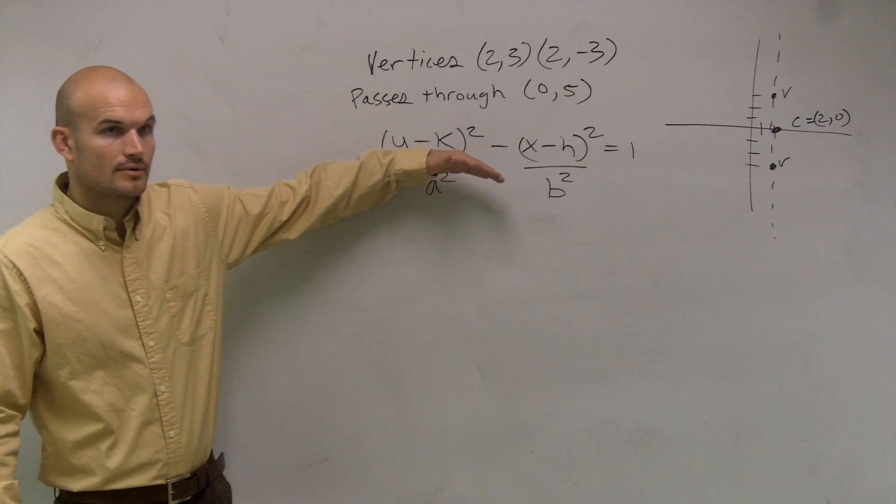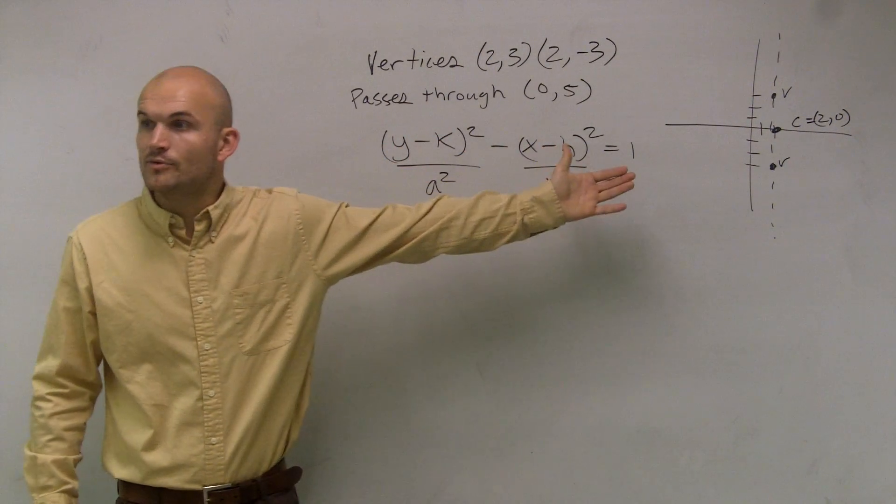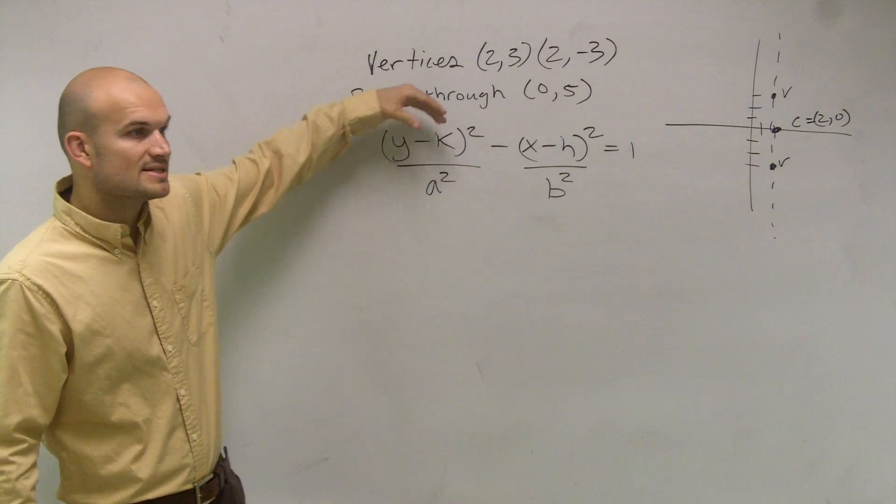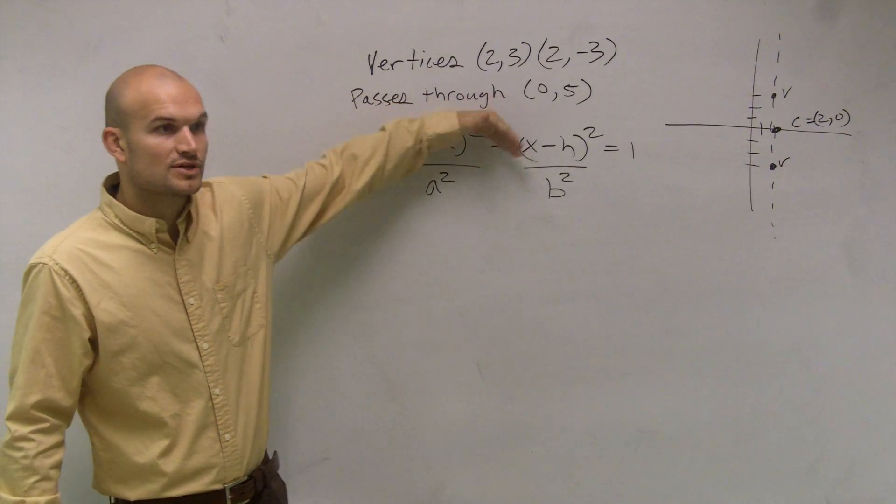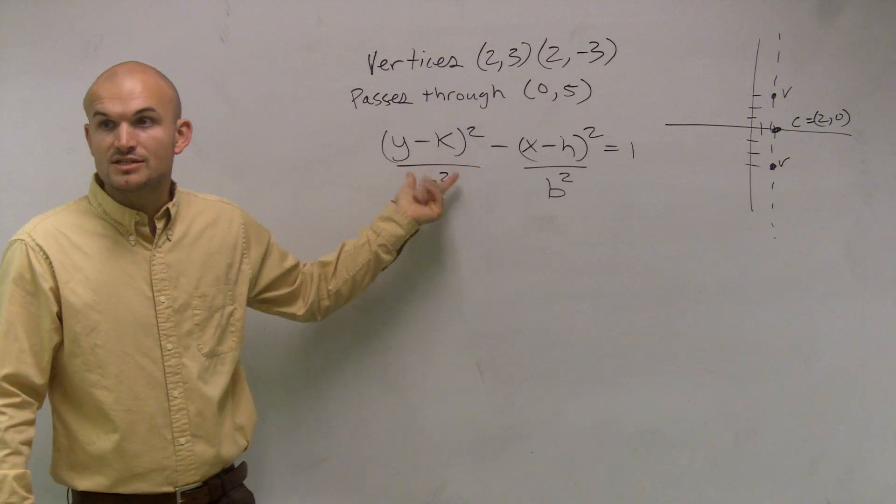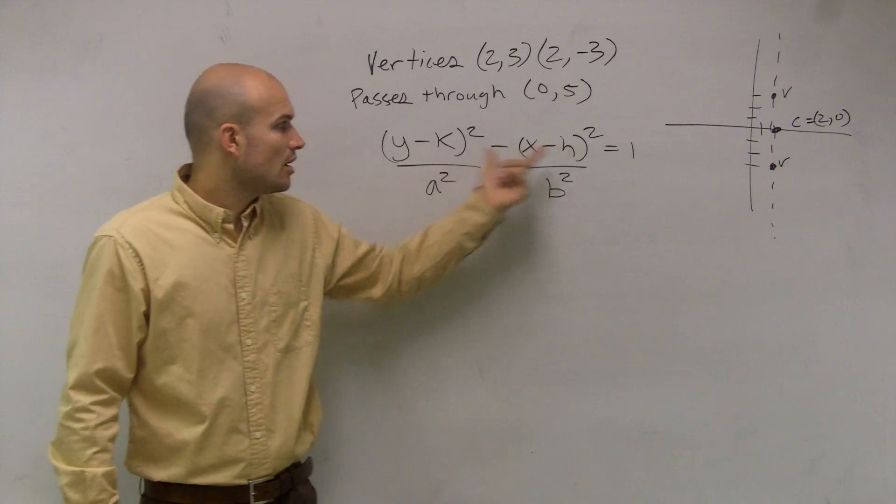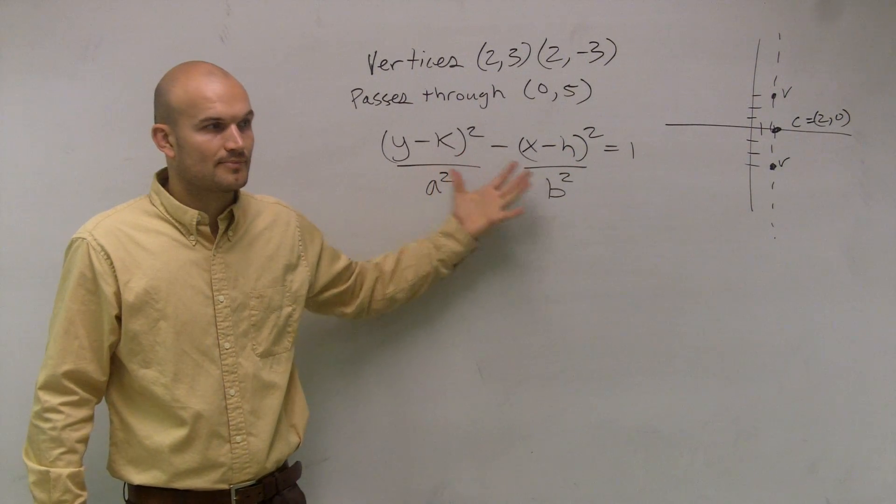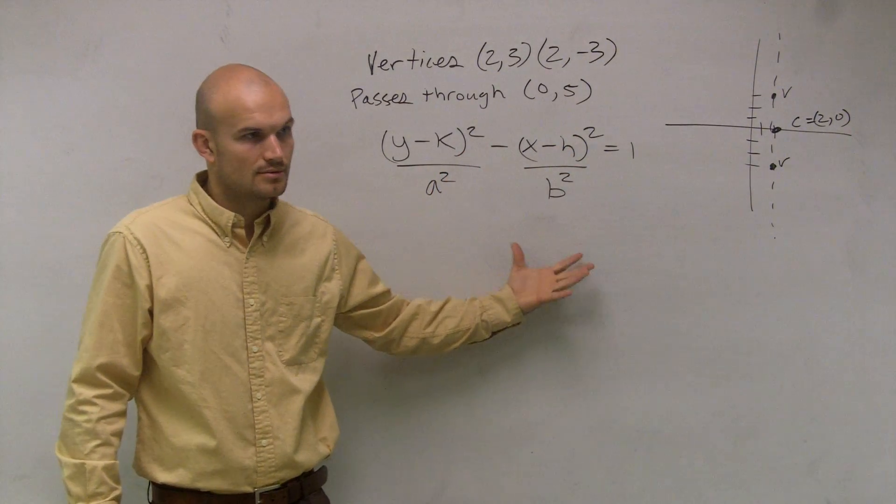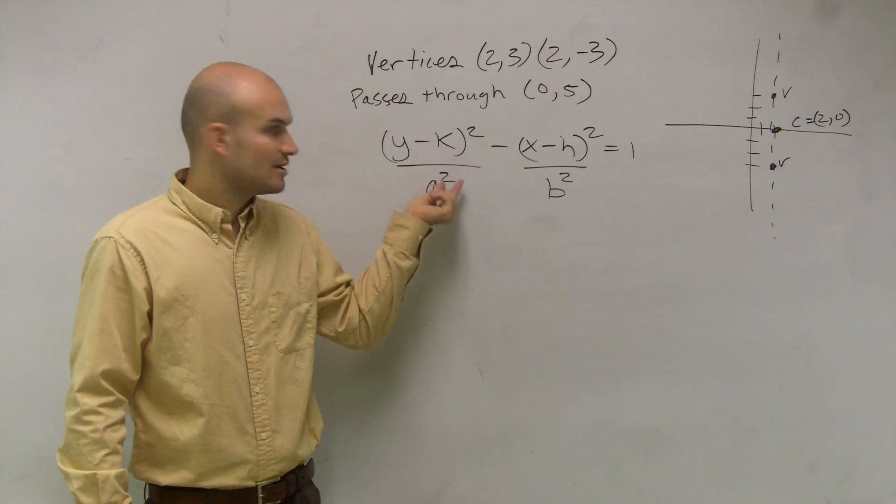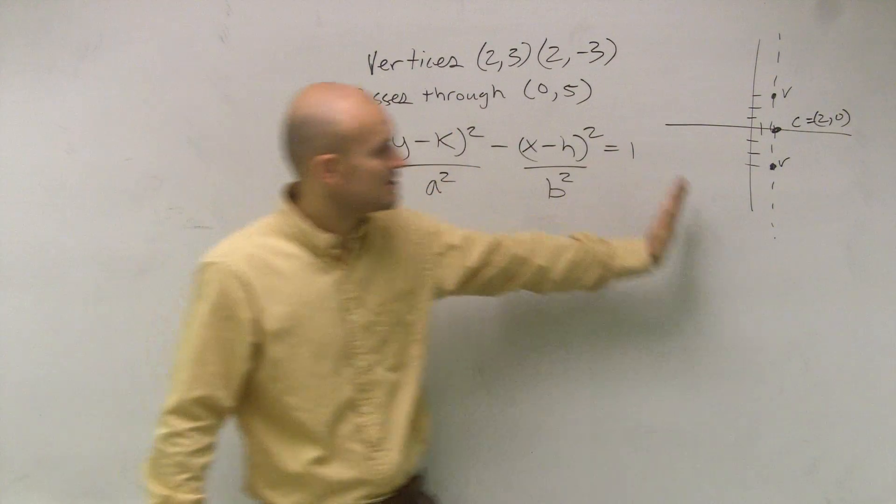When it's vertical, it's not so much where your a and your b is for hyperbolas, but it depends on which one's going to be and which one you're going to be subtracting from. So since it's vertical, our x is going to be subtracting from our y in the standard form of your equation. Make sense? Yes. Okay, because our y is going to be our major axis of symmetry.